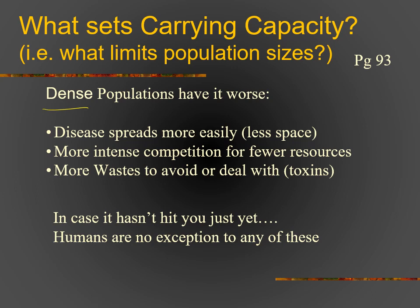If it hasn't hit you yet, this also makes sense in terms of humans. Think about places that are really expensive to live — big cities, big metropolitan areas. Part of the reason is more competition for those places, higher taxes to deal with waste products and trash, and disease tends to spread more easily where human populations are dense. Metropolitan areas tend to be epicenters for things like the flu virus to spread.